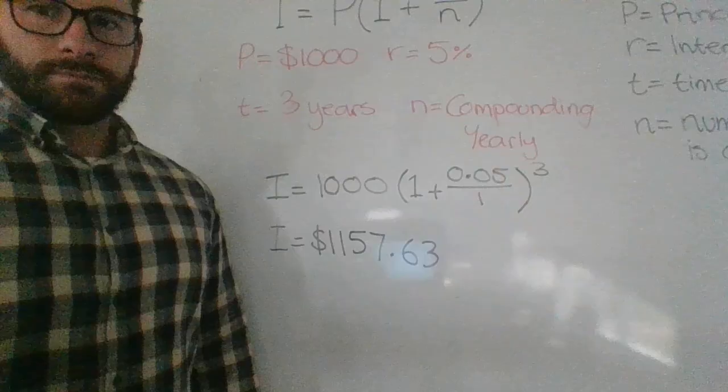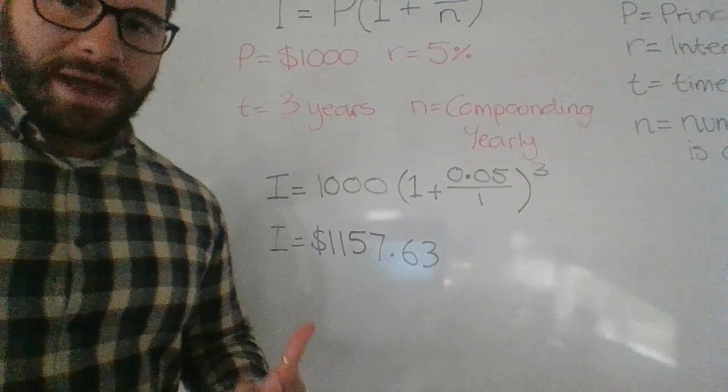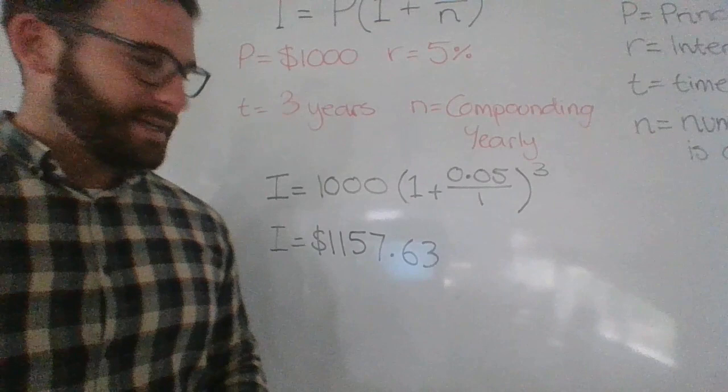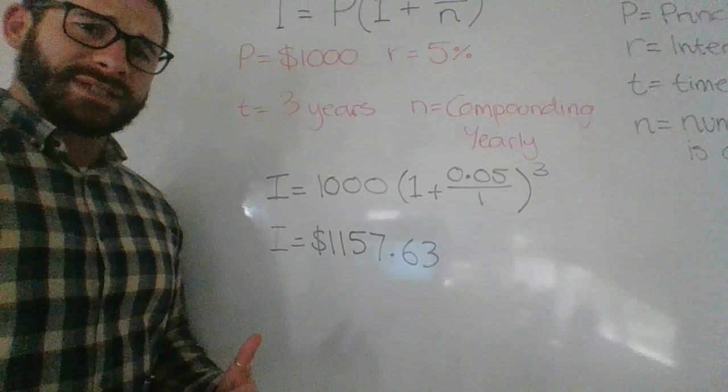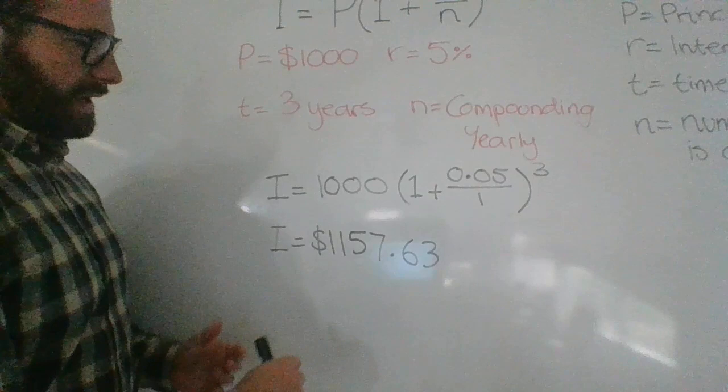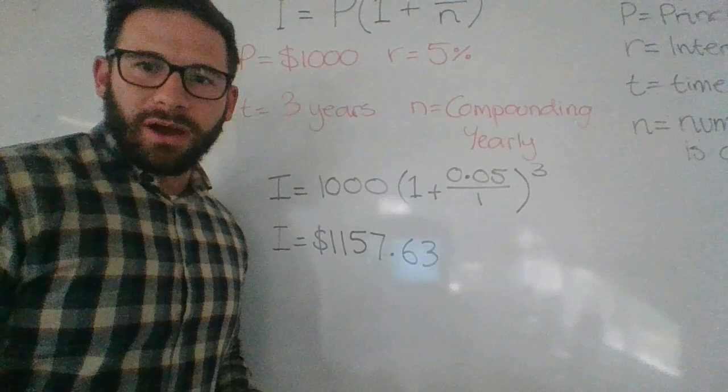So the amount of interest that I end up with, or in fact the amount that I finish with, is one thousand one hundred fifty seven dollars and sixty three cents. So I guess the question, if I was asked how much interest did I earn, well I'll go this value here minus my initial principal, so it would be one hundred and fifty seven dollars and sixty three cents in the three years that I invested that money.